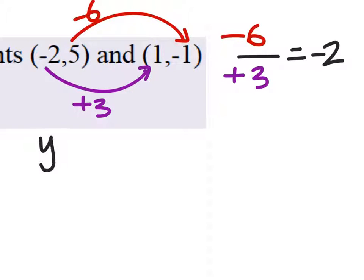Because now we're gonna write point-slope form. So we have our slope which was a negative 2, and what point do you guys want to use?